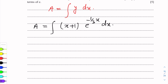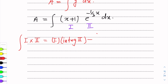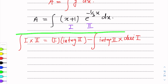For integration by parts: first function is (x+1) and second function is e^(-1/3 x). The formula for integration by parts is: integral of (first × second) = first × integral(second) − integral [integral(second) × derivative of first]. This is the formula we will apply here.